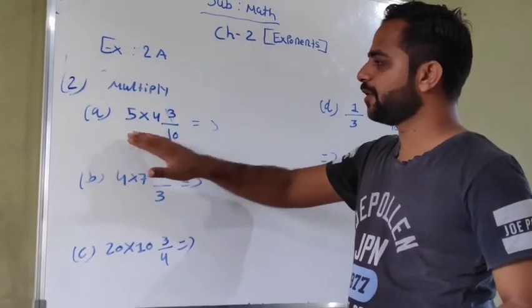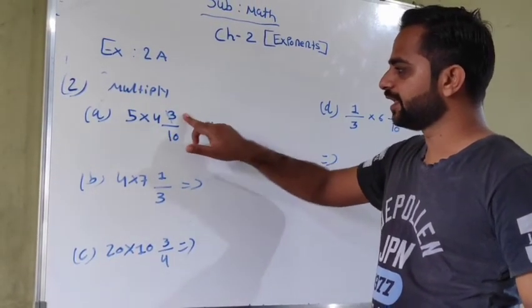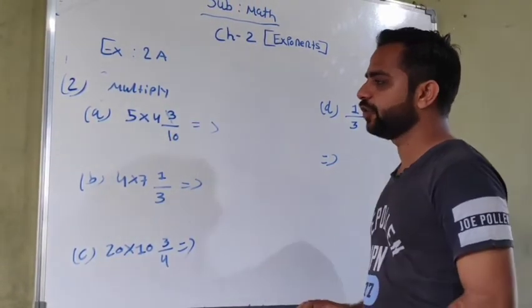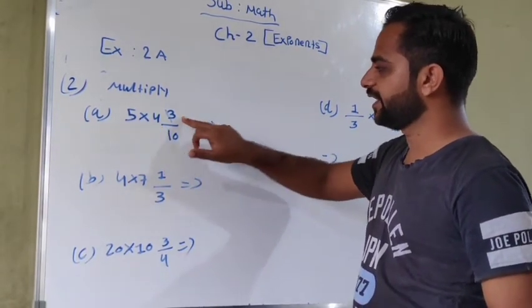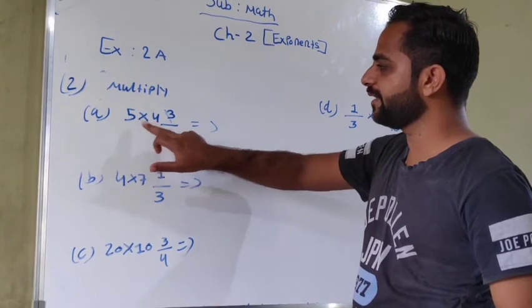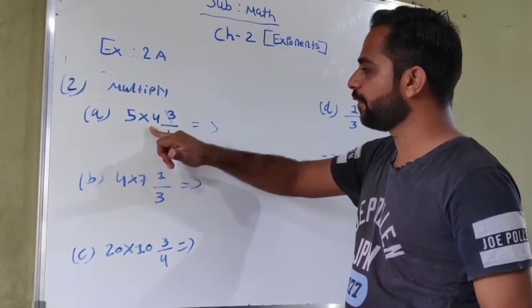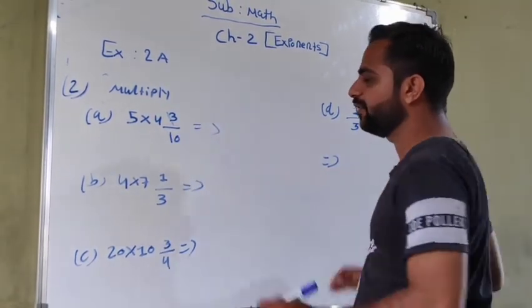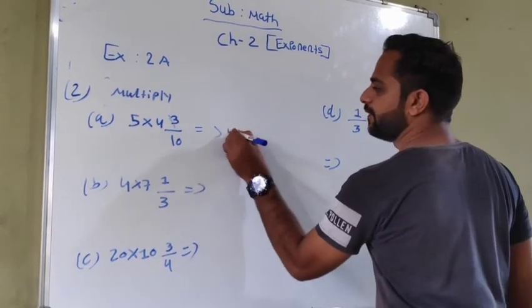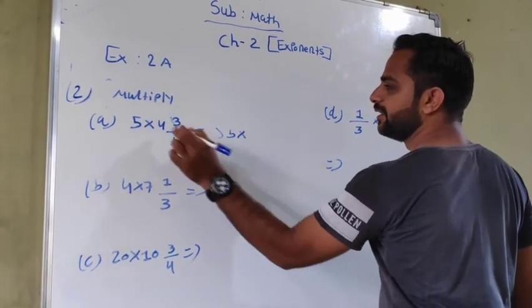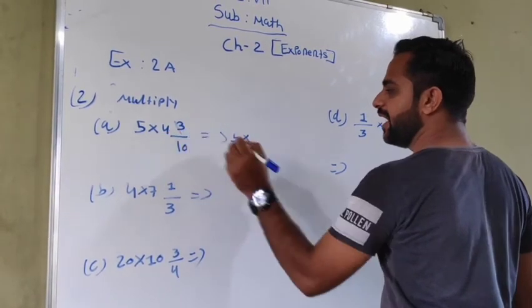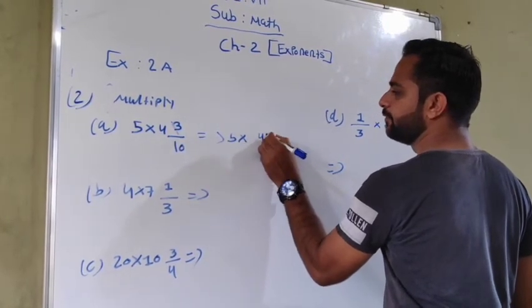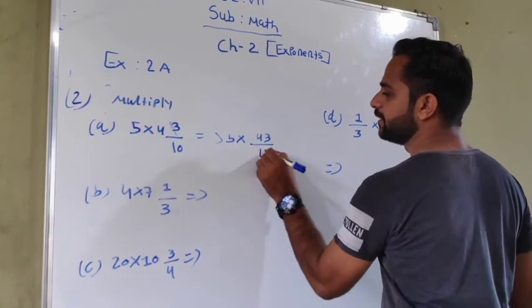Next point is multiply out 5 multiply by 4 and 3 upon 10. So first of all we multiply 5 to 4, which gives us 20, then 20 plus 3 is 43 upon 10. Now 5 times 43 upon 10, which simplifies to 43 upon 2.